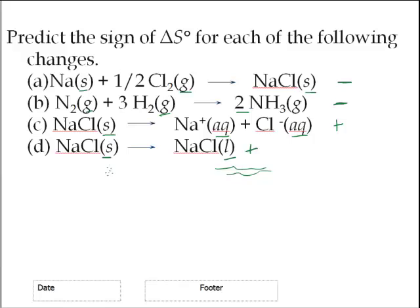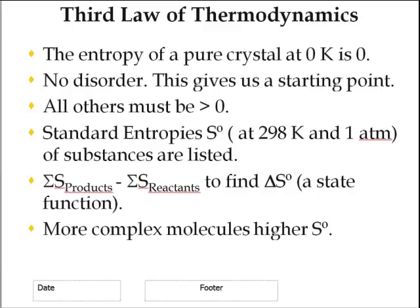So here we come to our third and final law of thermodynamics, and that is that the entropy or disorder of a pure crystal at zero Kelvin is zero. It's a pretty important thing. The reason it is is it gives us a starting point, so we can compare all sorts of molecules to a crystal at zero degrees Kelvin, which means it's not moving, there's no vibration, there's no rotation, and therefore the amount of entropy is zero.